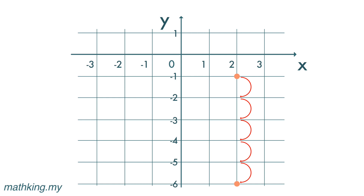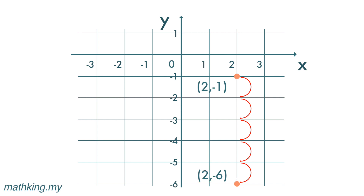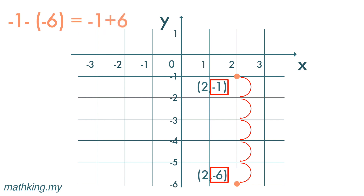Or we can use the subtraction method to find the difference. The x-coordinate is two for both because both points are two units to the right of the y-axis. The y-coordinates are different: one is negative one, the other is negative six. To find the difference between the y-coordinates, we use subtraction: negative one minus negative six becomes negative one plus six, which gives us five — five units.